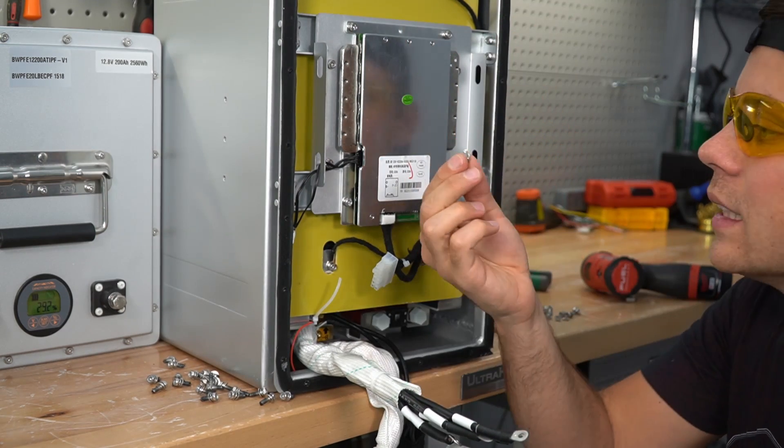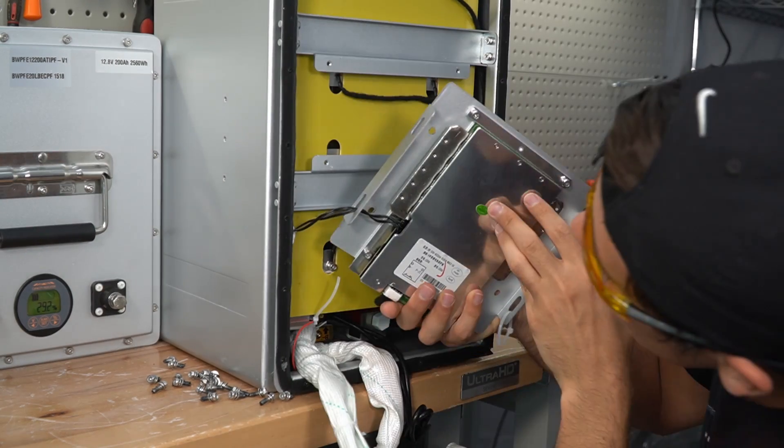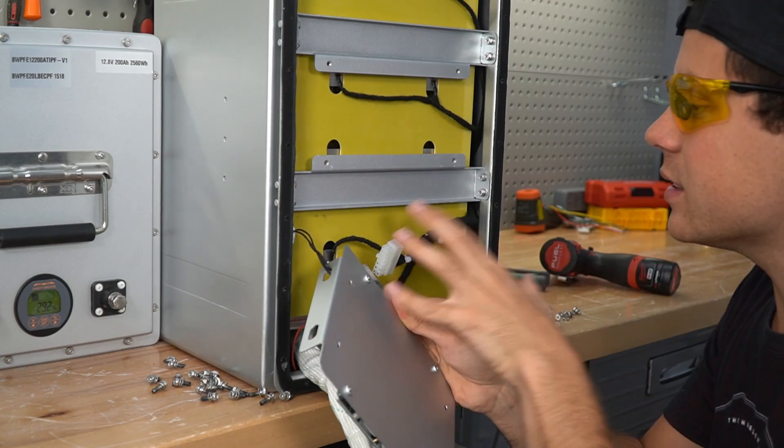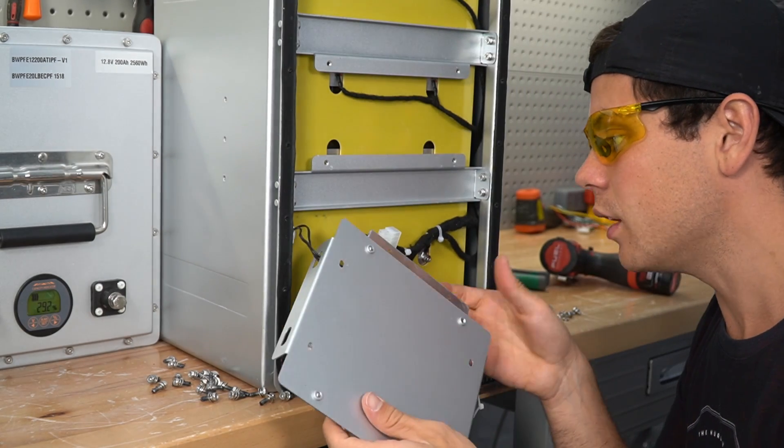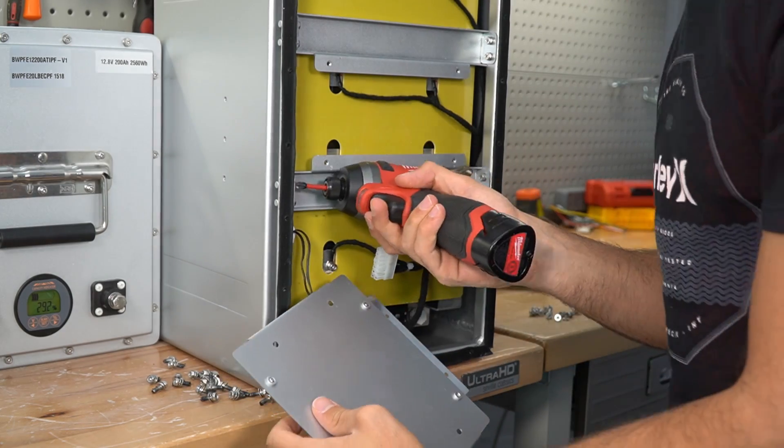These are really nice screws and each one still has a lock nut washer. Oh man, I don't want to hurt these connections. Everything is glued. There is not a single connection that is not glued on this battery. It's been a while since I've seen a battery this well designed. This is crazy.